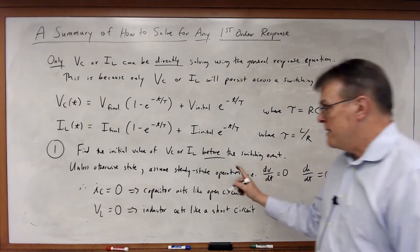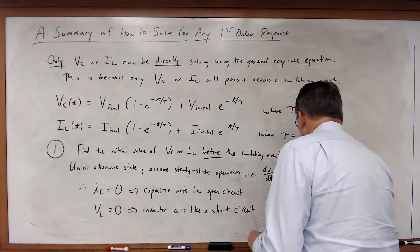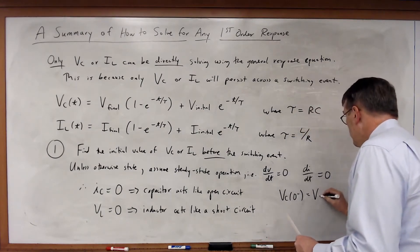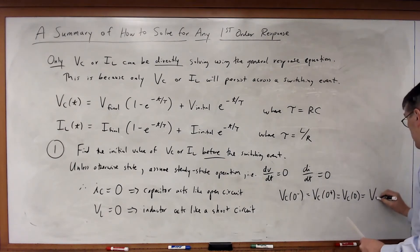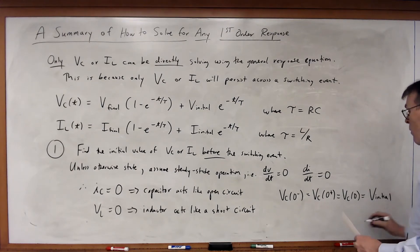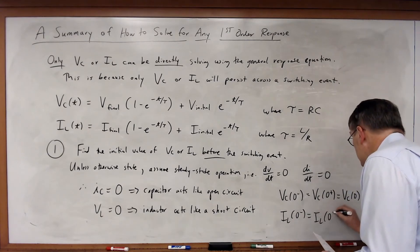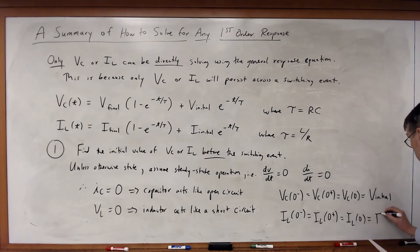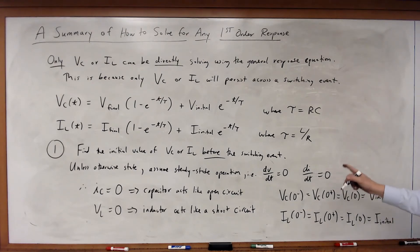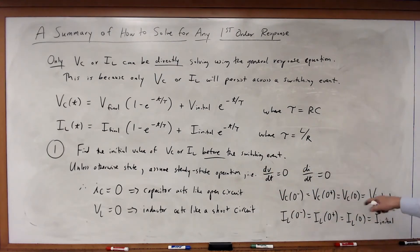Also, VL = 0 under steady state. From here, you find that VC just before the switching event equals VC just after the switching event equals VC(0) — your initial condition. Similarly, IL just before the switching event equals IL just after the switching event equals IL(0) = I_initial. Find VC or IL for t less than zero assuming steady state, and you have your initial condition.